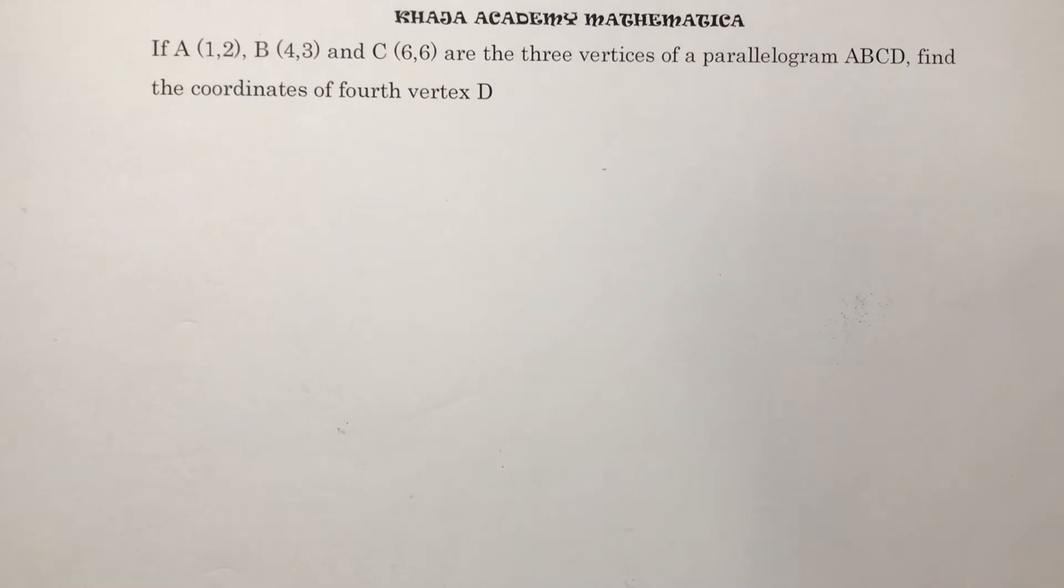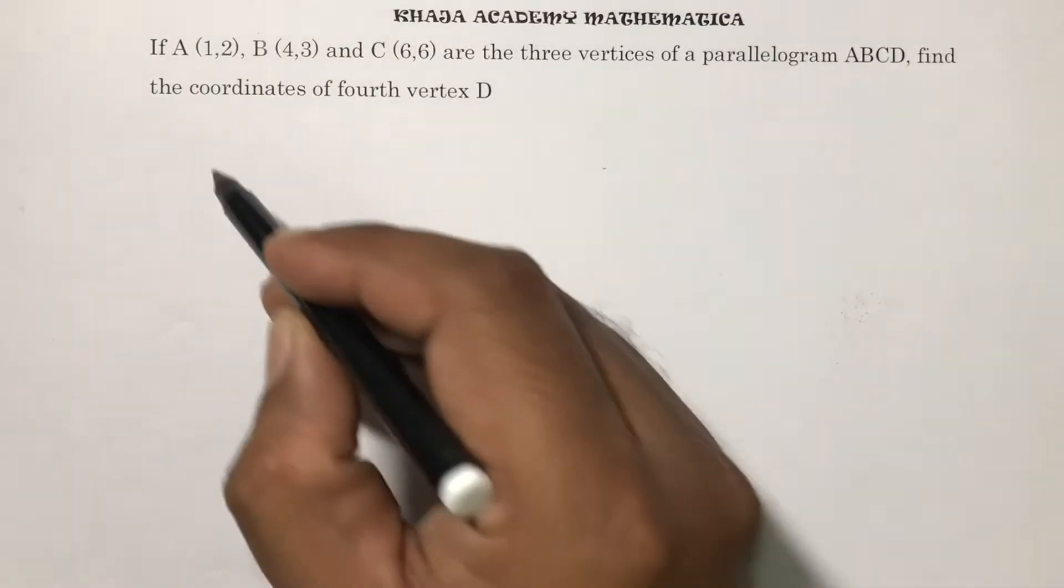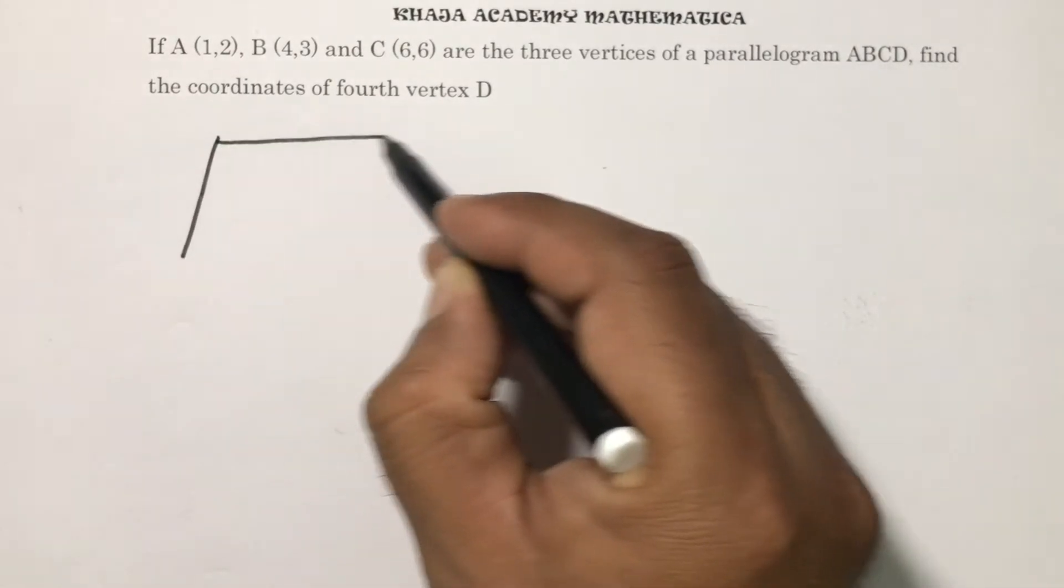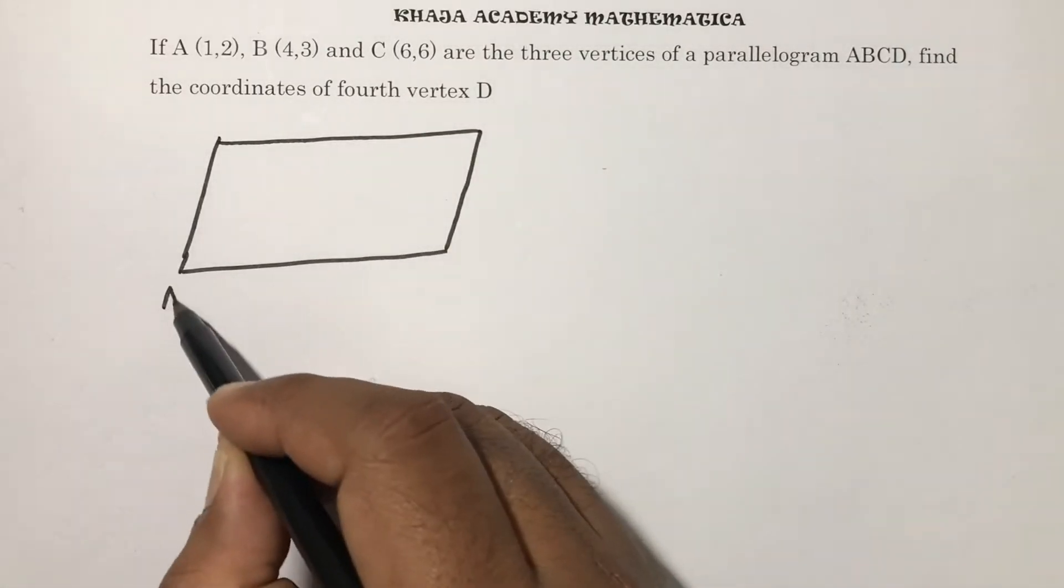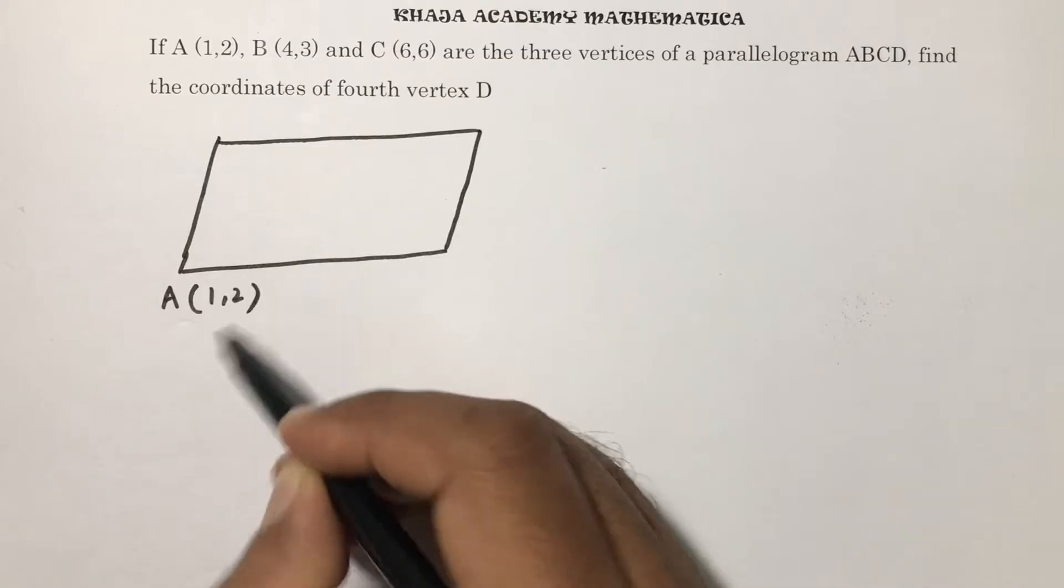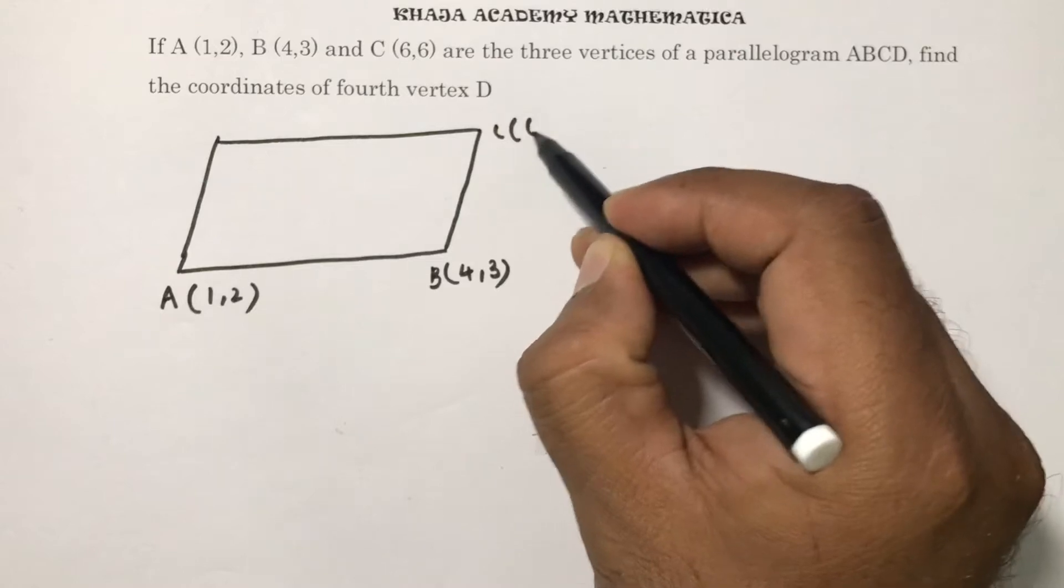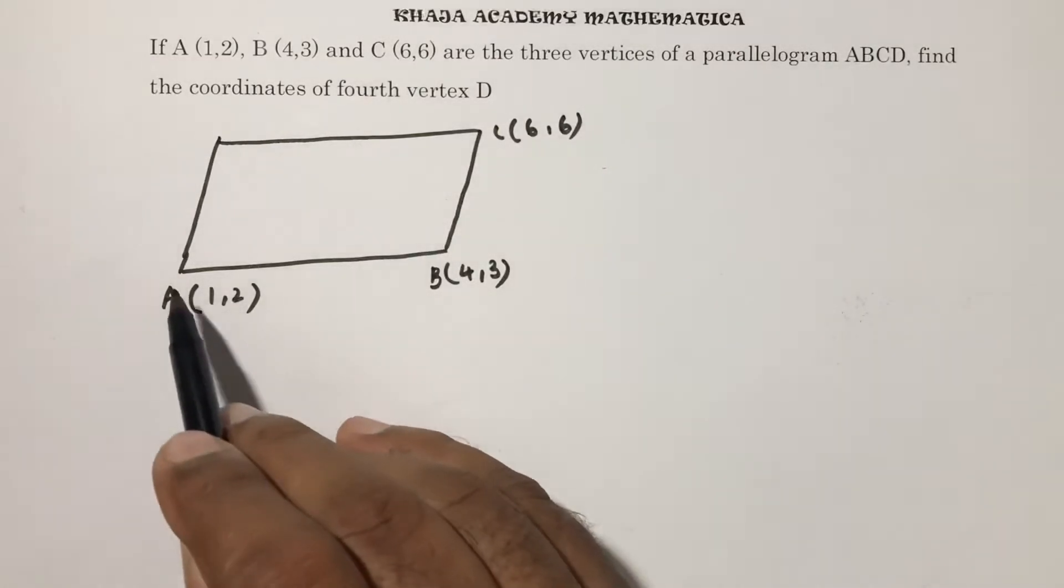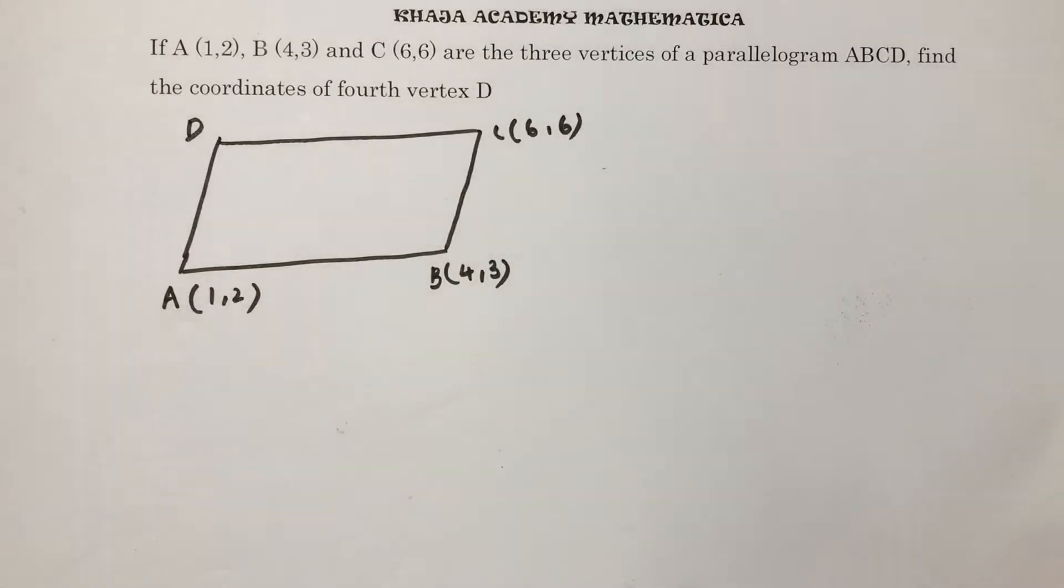If A, B, and C are three vertices of a parallelogram ABCD. So here parallelogram ABCD. A is given 1, 2, B is 4, 3, C is 6, 6, right in order like cyclic A, B, C and we need to find the fourth vertex D.